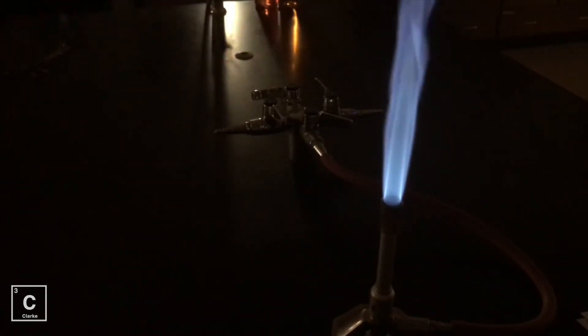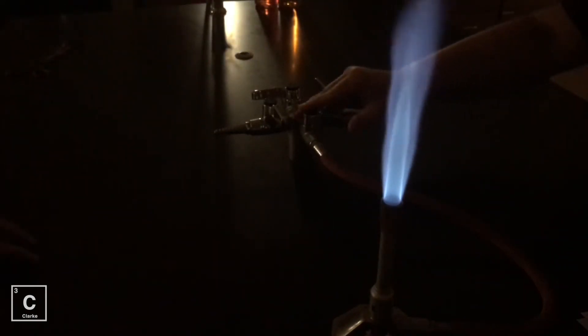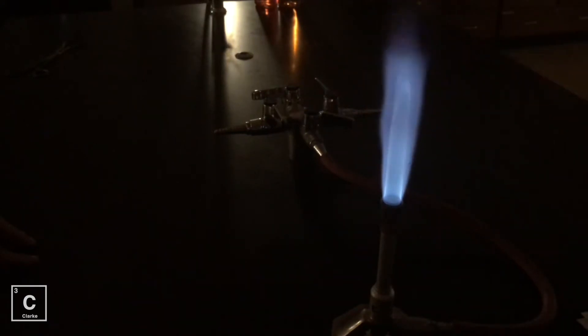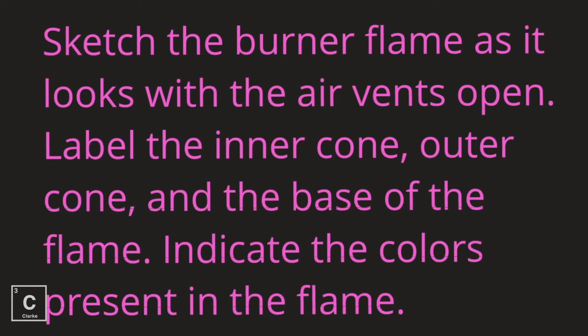Here's the inner cone and the outer cone. This is the kind of fire that we will be using for chemistry. This is the hottest fire that the Bunsen burners can produce when you have the roaring blue flame. Sketch the burner flame as it looks with the air vents open. Label the inner cone, outer cone, and the base of the flame. Indicate the colors present in the flame.